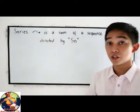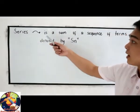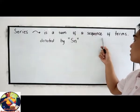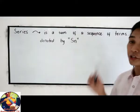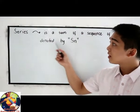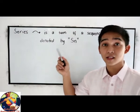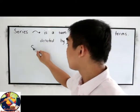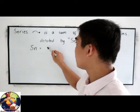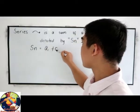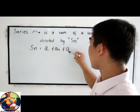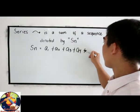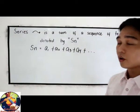By definition, a series is a sum of a sequence of terms, and that is denoted by S sub n. So S sub n equals a1 plus a2 plus a3 plus a4, and so on.